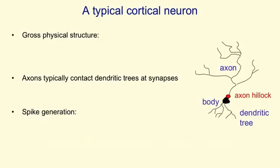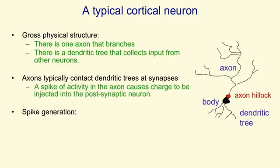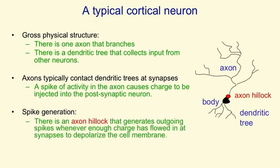A typical cortical neuron has a gross physical structure that consists of a cell body and an axon where it sends messages to other neurons, and a dendritic tree where it receives messages from other neurons. Where an axon from one neuron contacts a dendritic tree of another neuron, there's a structure called a synapse, and a spike of activity travelling along the axon causes charge to be injected into the postsynaptic neuron at a synapse. A neuron generates spikes when it's received enough charge in its dendritic tree to depolarise a part of the cell body called the axon hillock.